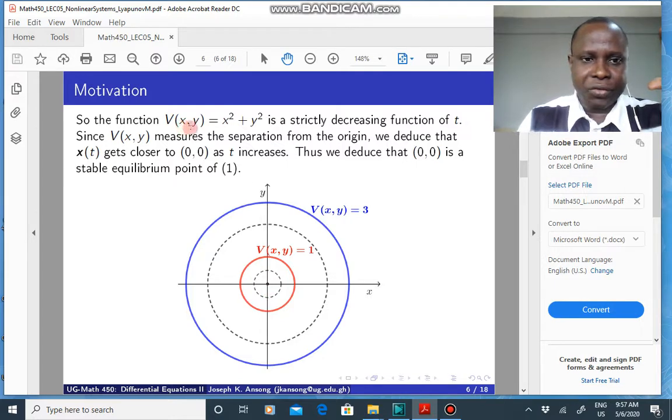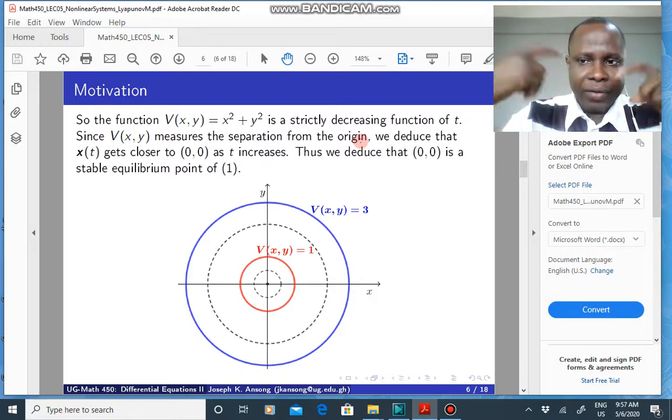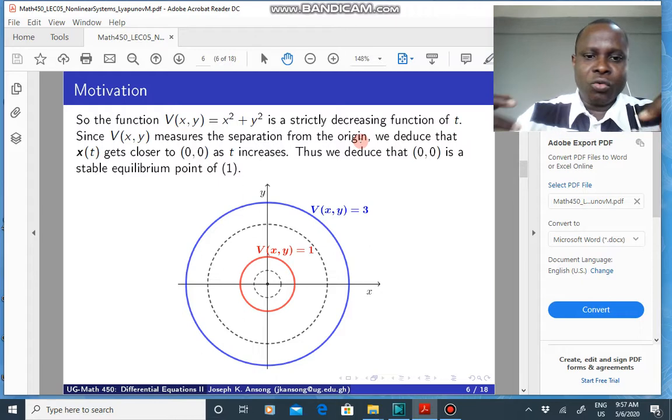This is a sketch of a couple of them. If V is one, you get a circle of radius one. If V is two, you get a circle of radius two, and so on. So this function V measures separation from the origin. So if it is decreasing with time, then we can deduce that the solution would get closer and closer to the origin as t increases.